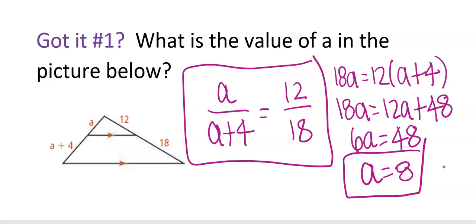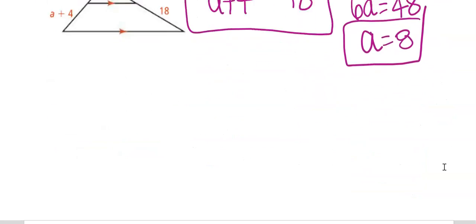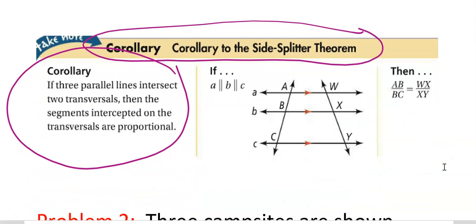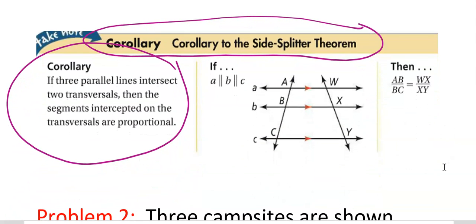Then we go to the corollary to the side splitter theorem. This basically says when you have multiple sets of parallel lines, they could have more than this if they wanted, you're still going to just set it up kind of like the triangle ones that we looked at. It just doesn't really form a triangle here. AB over BC, so we're sticking to that same side. Imagine an equals in the middle, and then the two on the right also kind of form another fraction.